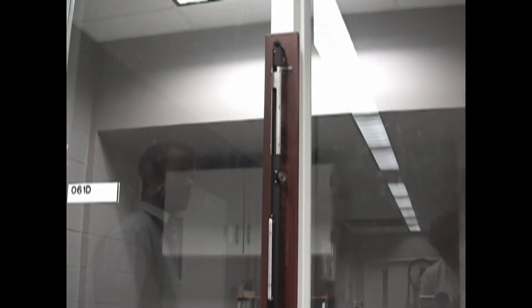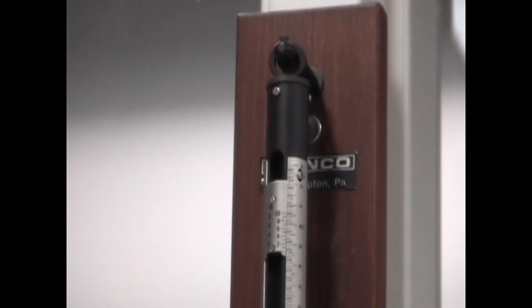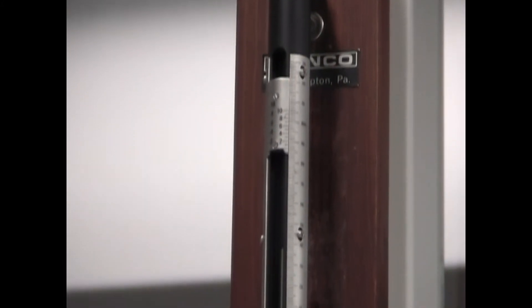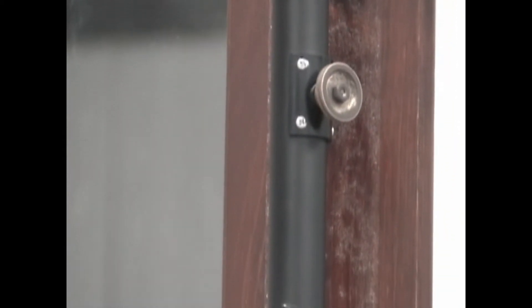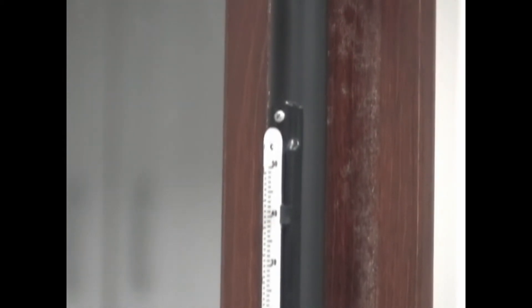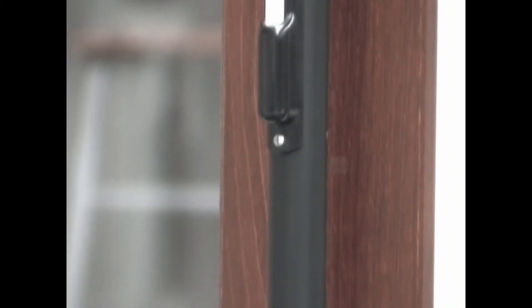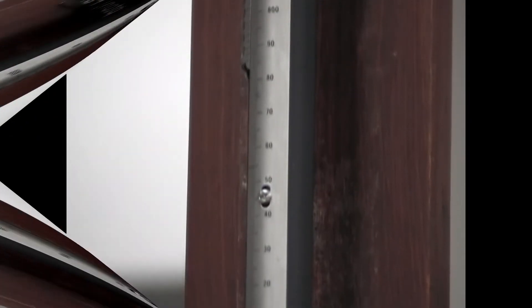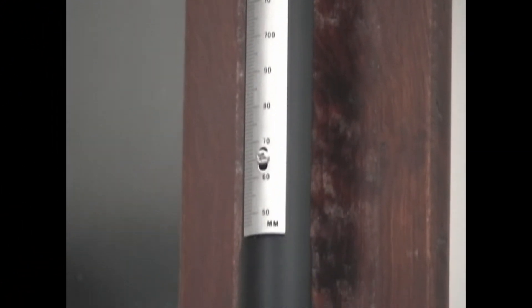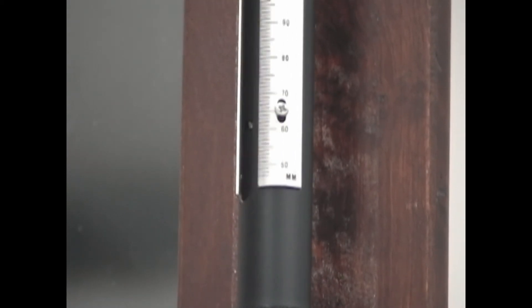You measure barometric pressure using a Fortin barometer. There is also a thermometer halfway down the barometer that measures temperature in degrees Celsius. The units that measure on the right side are in millimeters and on the left side in inches.